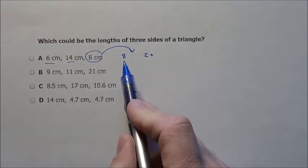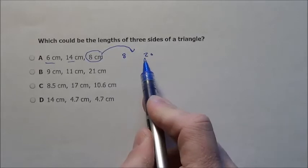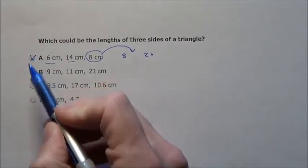It doesn't. It equals the 8, but it can't equal it. That's not allowed. It has to be a little bit more than 8 and a little less than 20. So A is out.